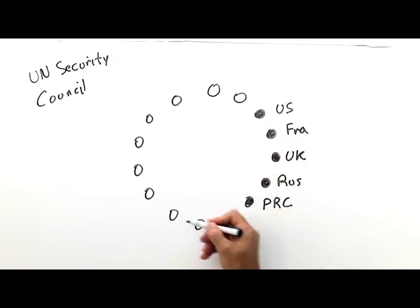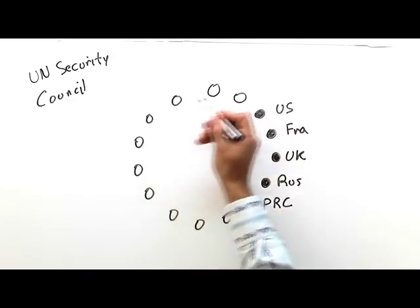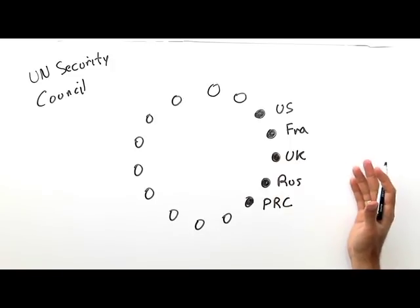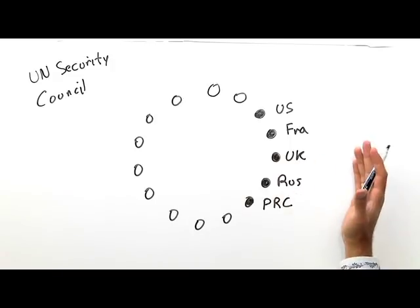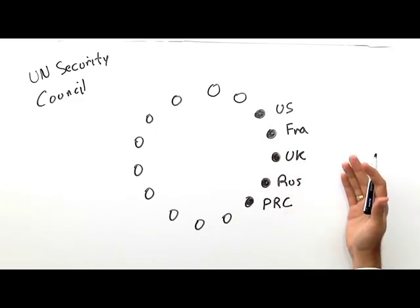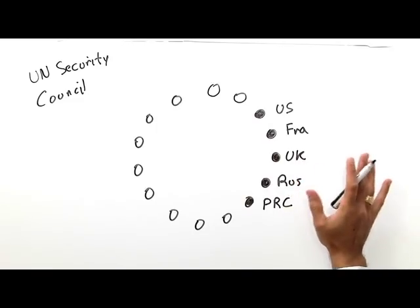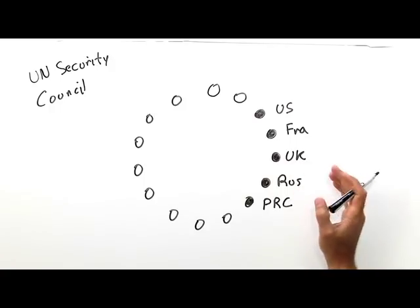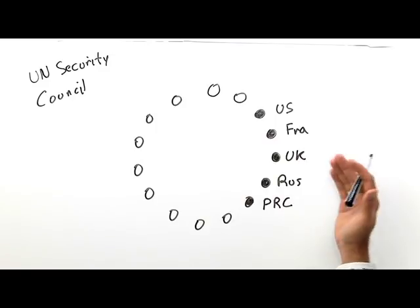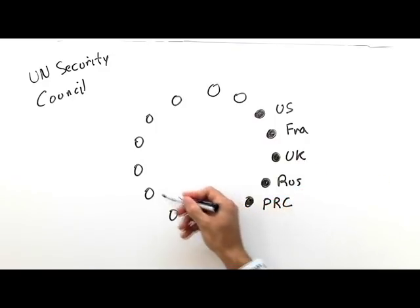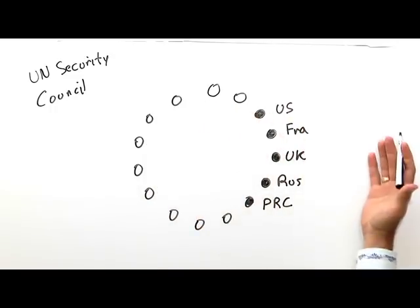The other 10 members of the Council are elected members, and they are elected by the General Assembly. There is a complicated formula for drawing countries from various regions around the world. Each elected country is on the Security Council for a two-year term, so every year five of these countries are being replaced.